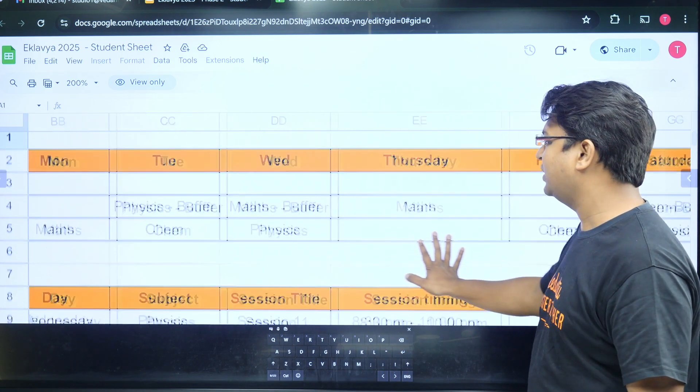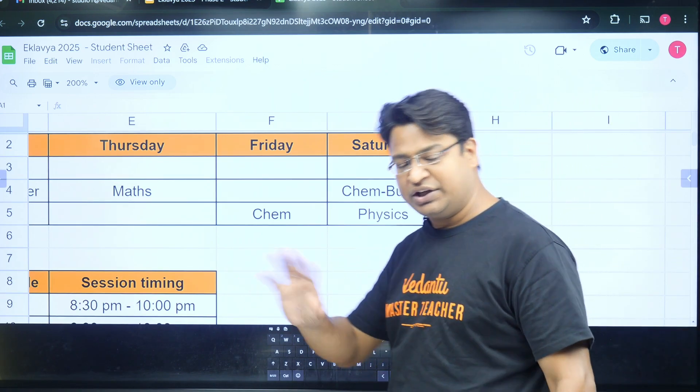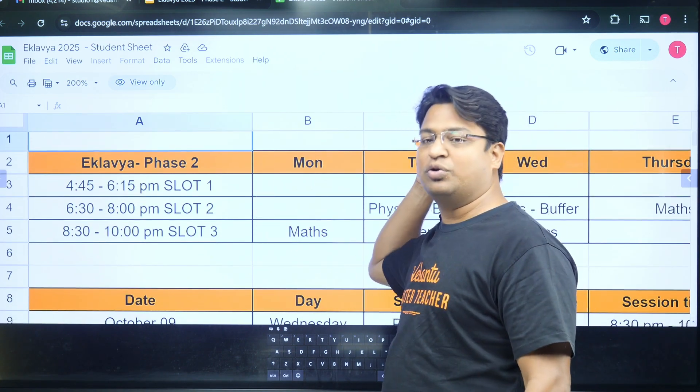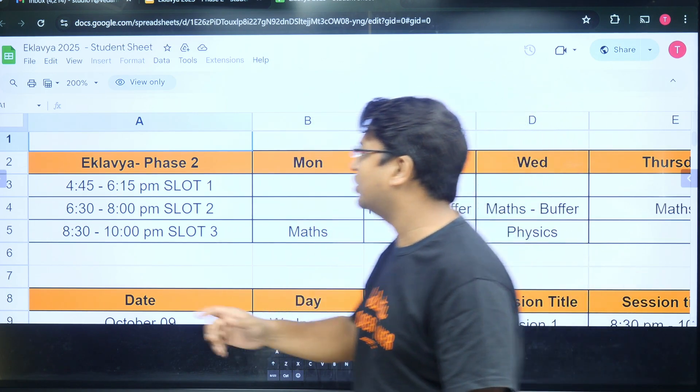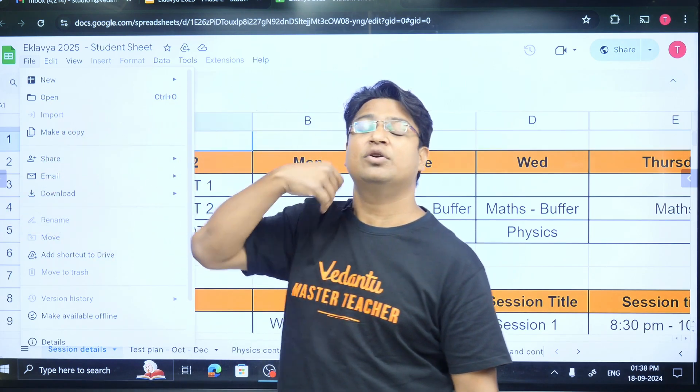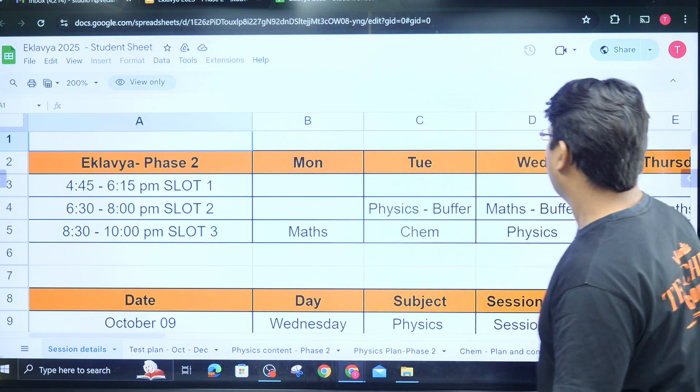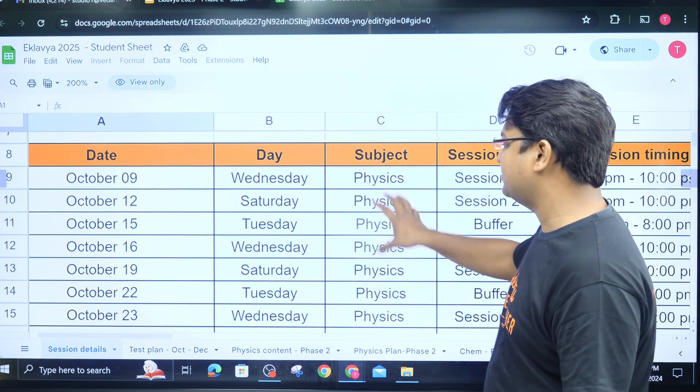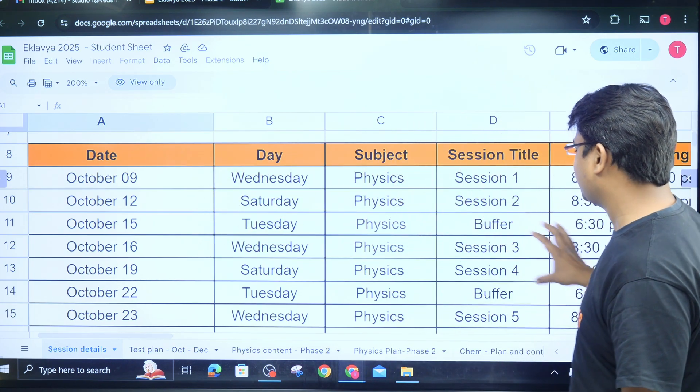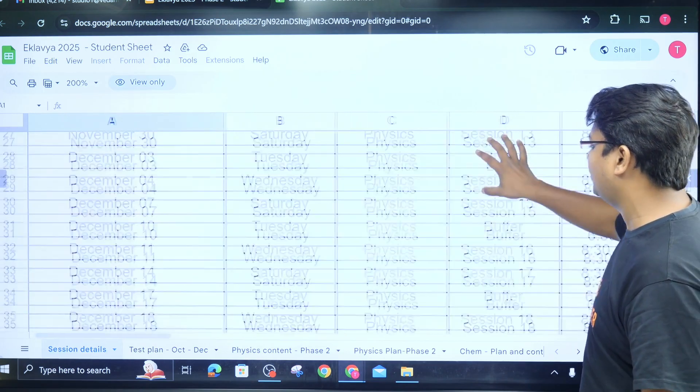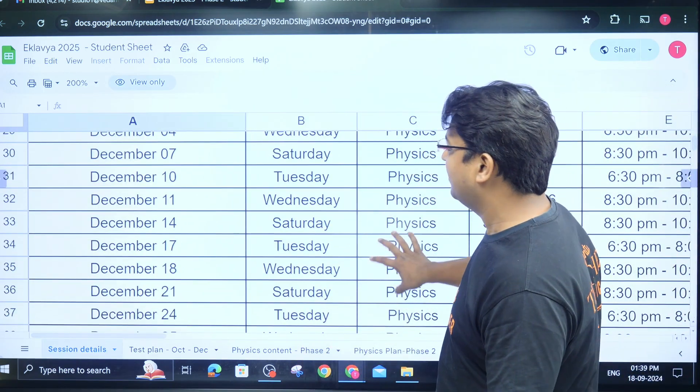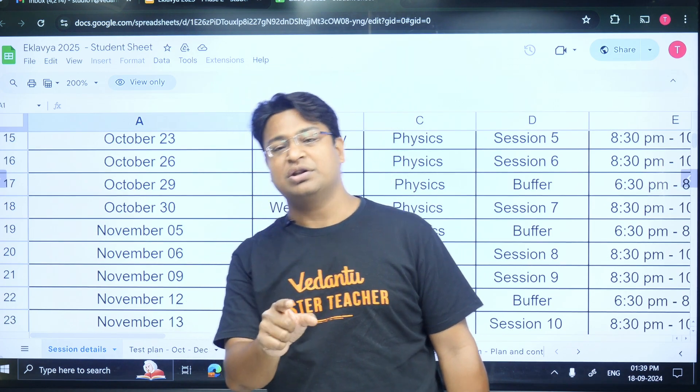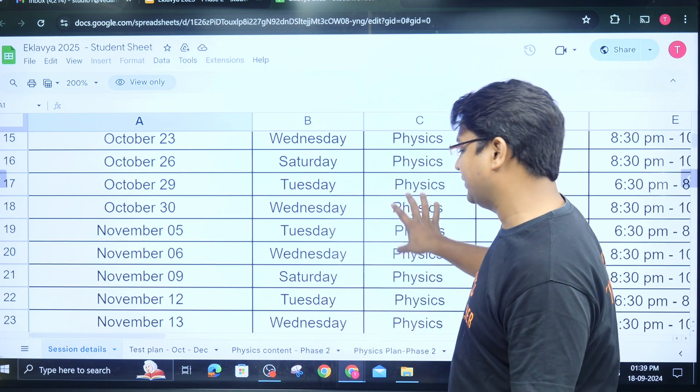Now what does this sheet tell you? Let me demonstrate everything. So when I click on that link this sheet has opened up. Let me increase the percentage so that this becomes clearly visible to everyone. First of all the schedule is there. You can make a copy of this sheet and then work with it. Just go to file and then make a copy.